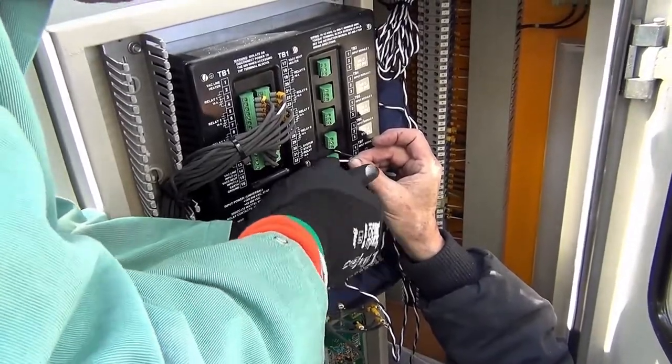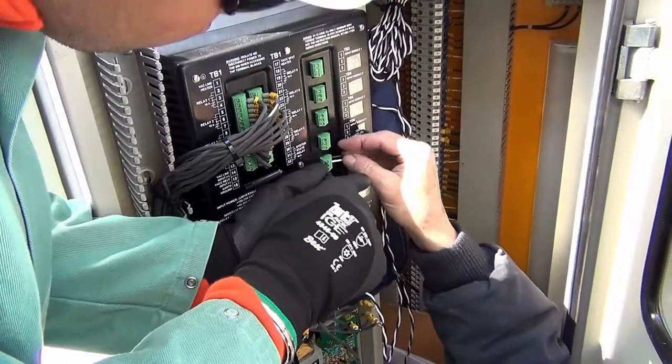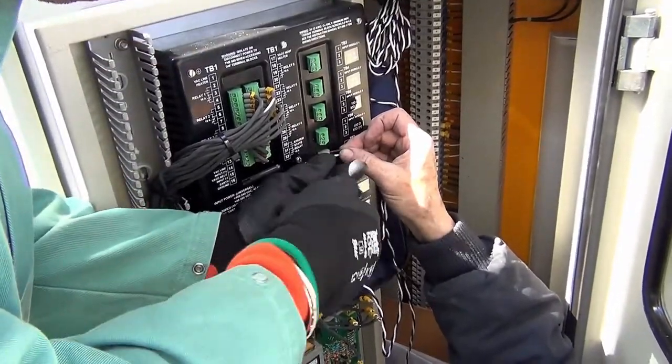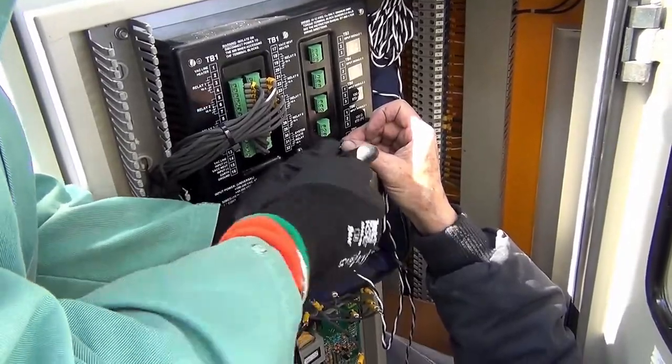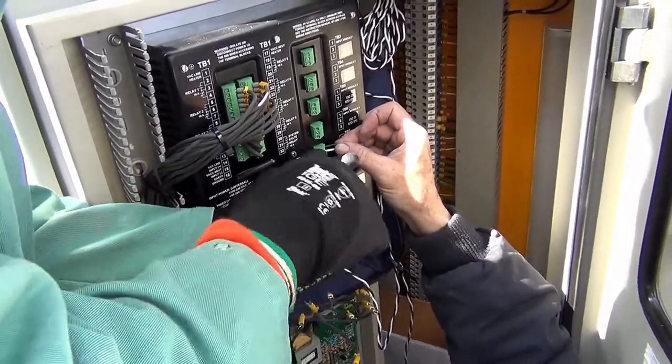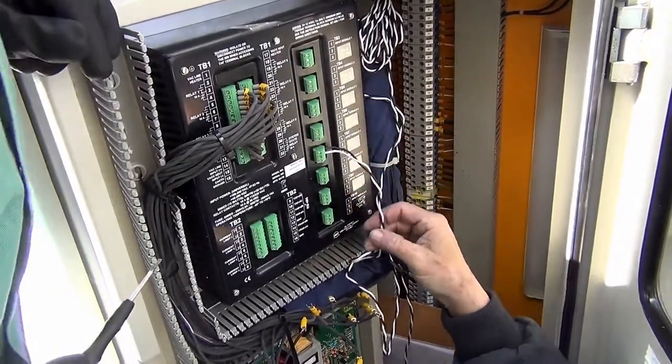The clamp on CT comes with two wires, black and white. You need to make sure that you connect these two wires to the designated input module for CT. You can find the sticker on the backside of the 509 which calls out which input module is configured for what.